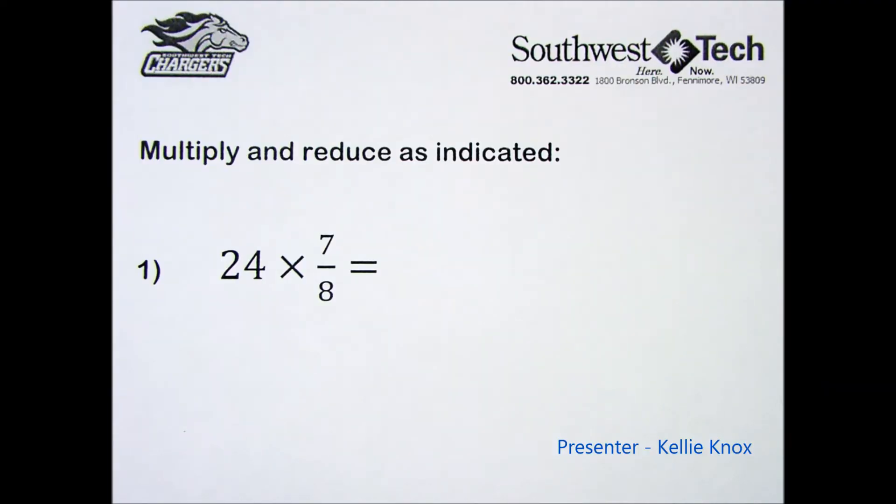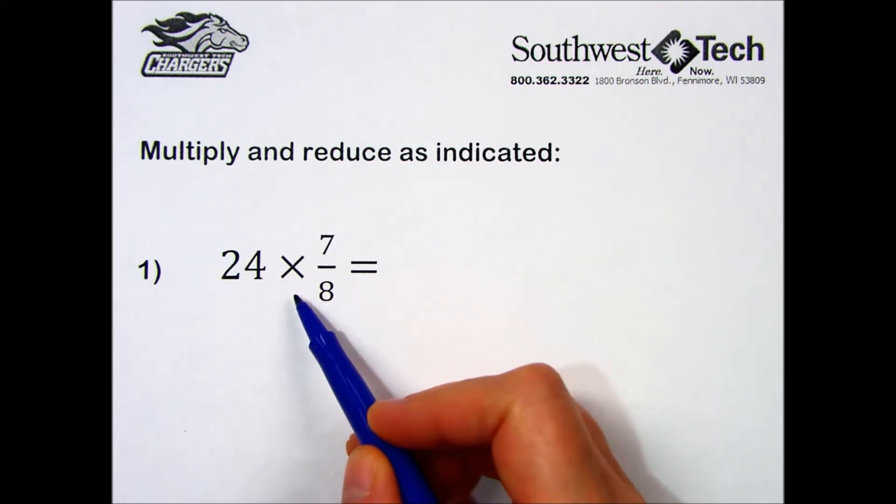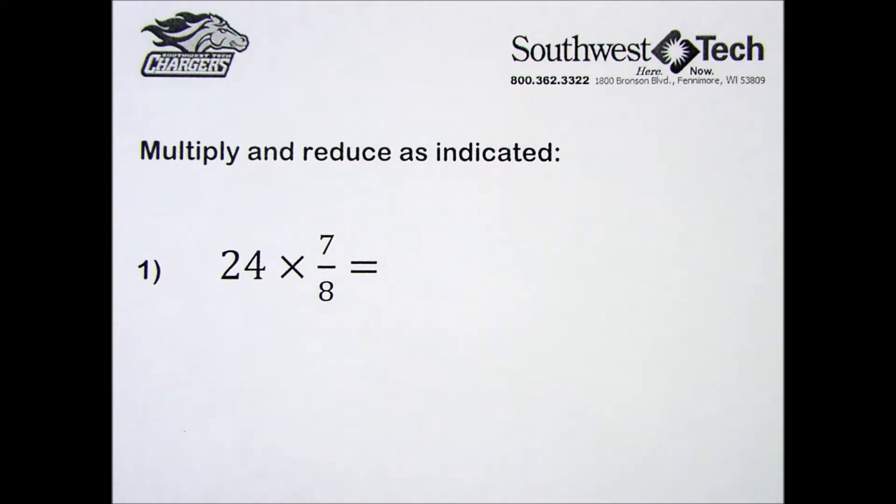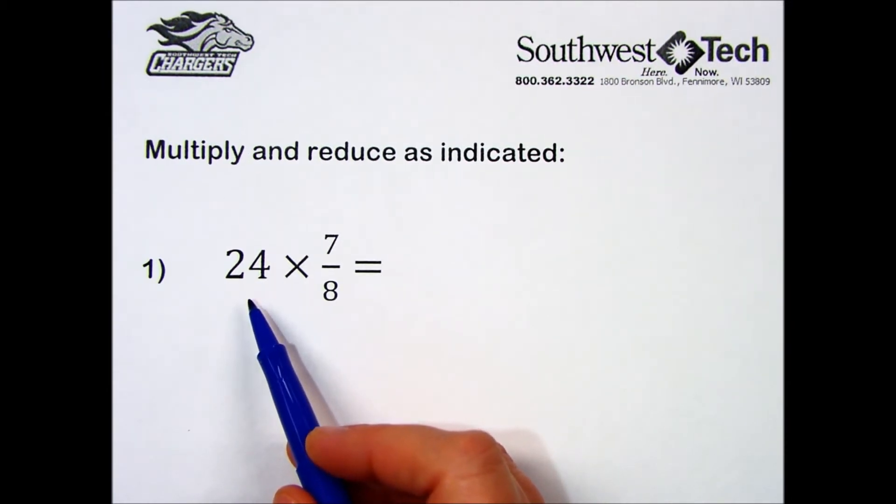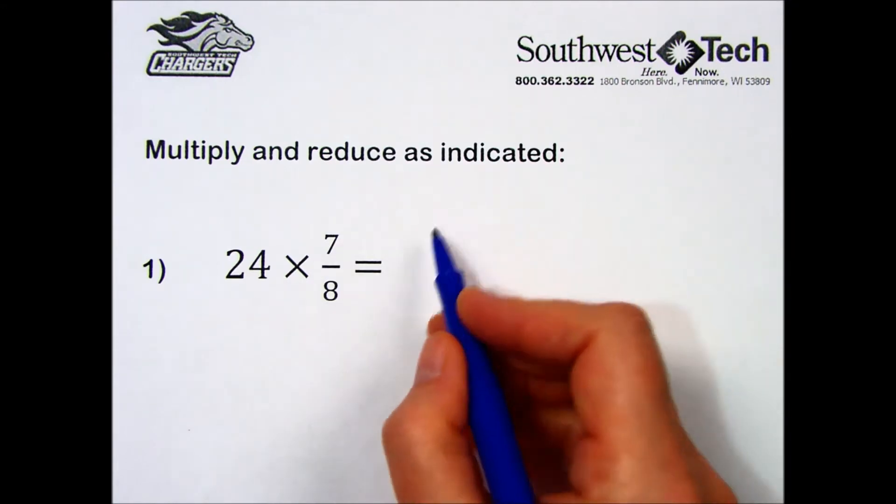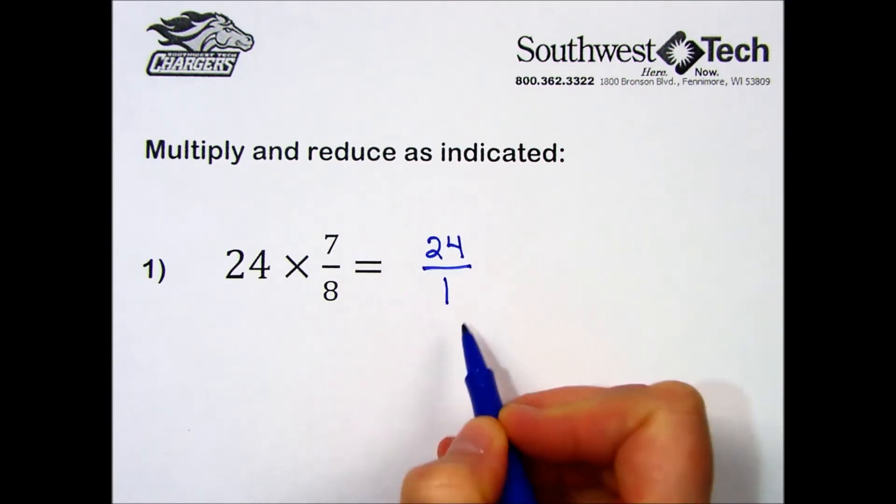In practice problems 1 through 10, we are to multiply and reduce as indicated. You'll notice that one of our numbers is not a fraction—it's a whole number times a fraction. We will need to make the whole number 24 look like a common fraction first. In the lesson, it describes any whole number can be changed into a fraction by writing a denominator of 1 underneath it. Let's try that: 24 is the same value as 24 over 1.